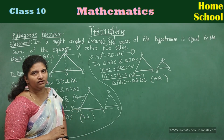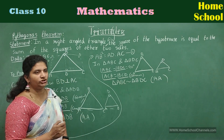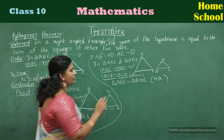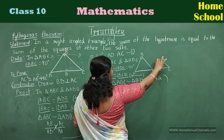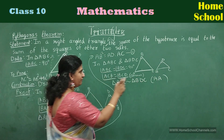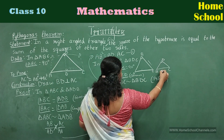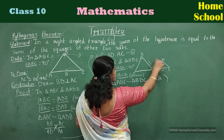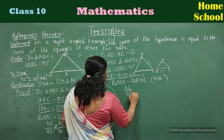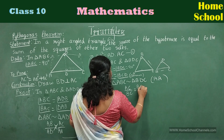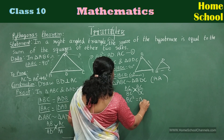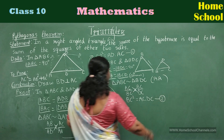If these two triangles are similar, the corresponding sides are in proportion. Observe the two figures: which side is common? BC — it appears in both triangles. Write the ratio: AC/BC = BC/DC. Cross multiply: BC² = AC × DC. Mark this as equation 2.